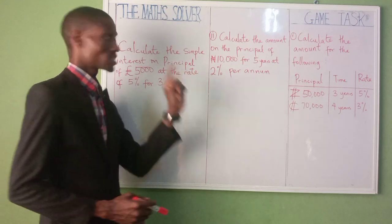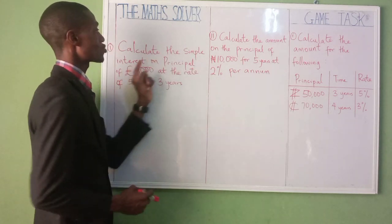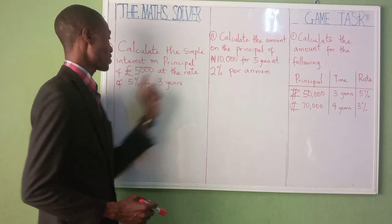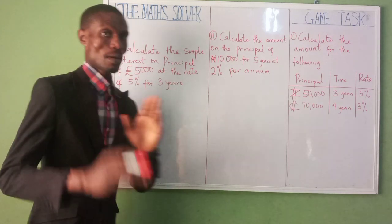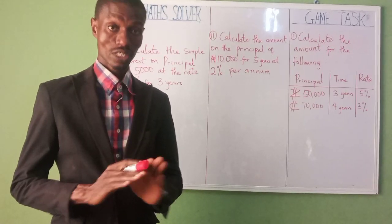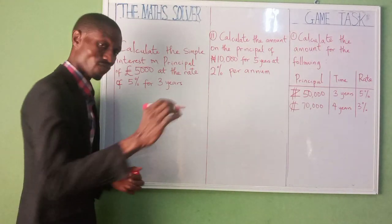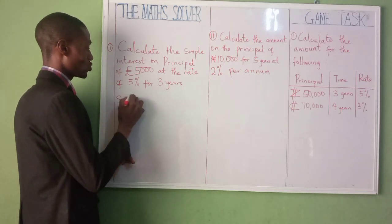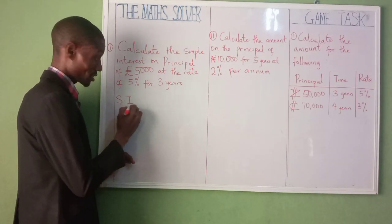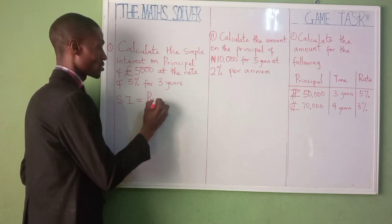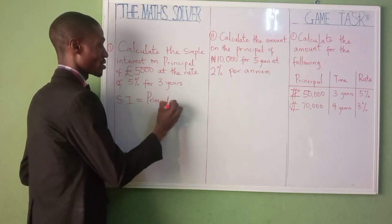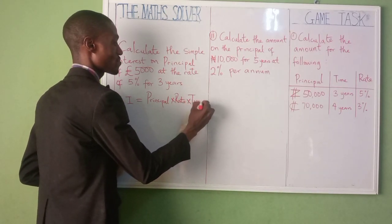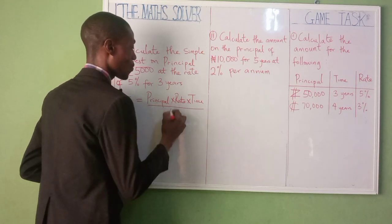For example, look at the question: Calculate the simple interest on the principal of £5,000 at the rate of 5% for 3 years. We want to calculate simple interest. It's very simple — it has a formula. The formula is Simple Interest, which I use as SI, equal to Principal times Rate times Time over 100.